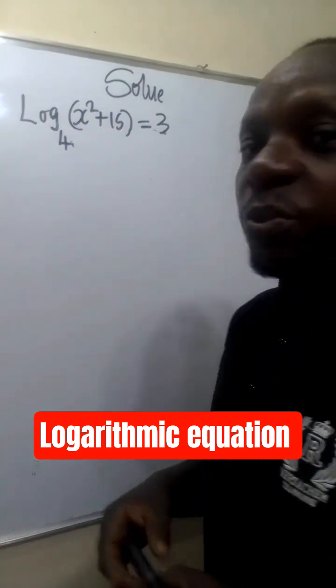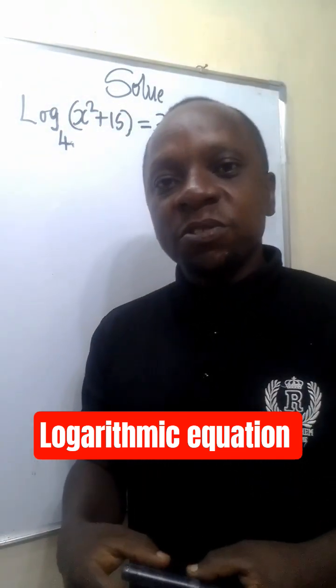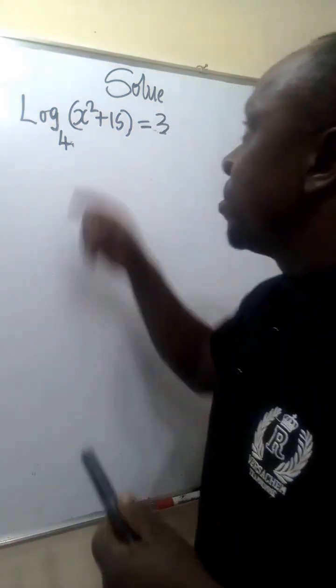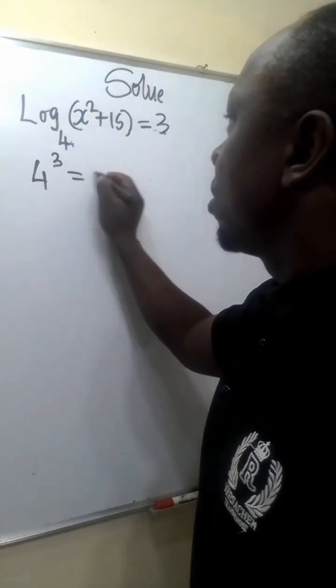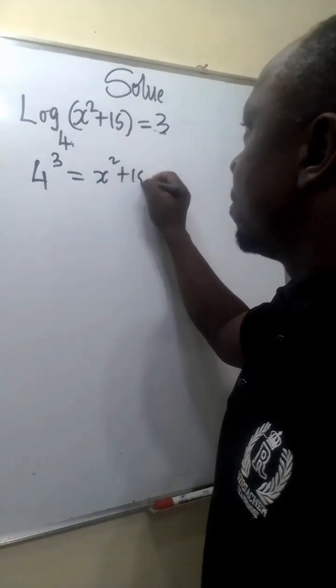To solve this logarithmic equation, we start by converting it to indices. This will be the same as 4 raised to power 3 equals x squared plus 15.